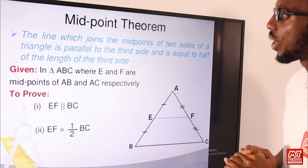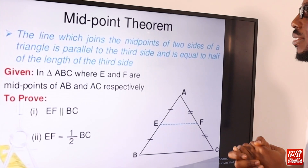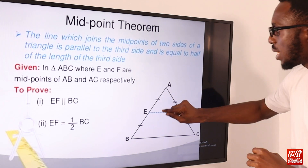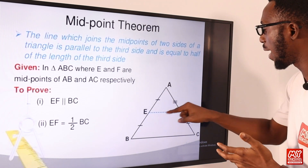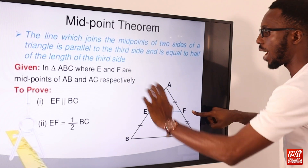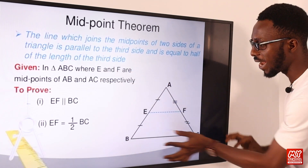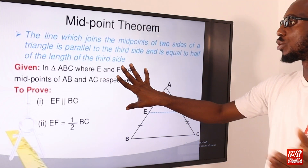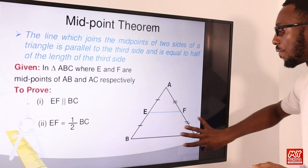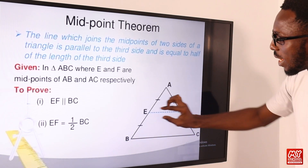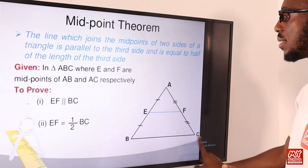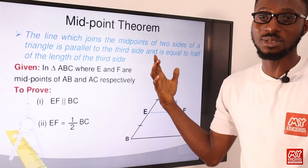We have the midpoint theorem: the line which joins the midpoints of two sides of a triangle is parallel to the third side and equal to half its length. So if we mark the midpoints of AB and AC as E and F respectively, then line EF is parallel to BC and EF equals half of BC. So if EF is marked as 3, then BC will be 6.